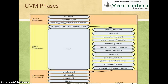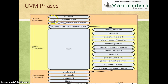This diagram shows in detail all the UVM phases. Broadly divided into three phases: the build phases, the run phases, and the cleanup phases. The build phases are further classified as: build phase, connect phase, end of elaboration, and start of simulation phase — of which the build and connect phases are most commonly used.